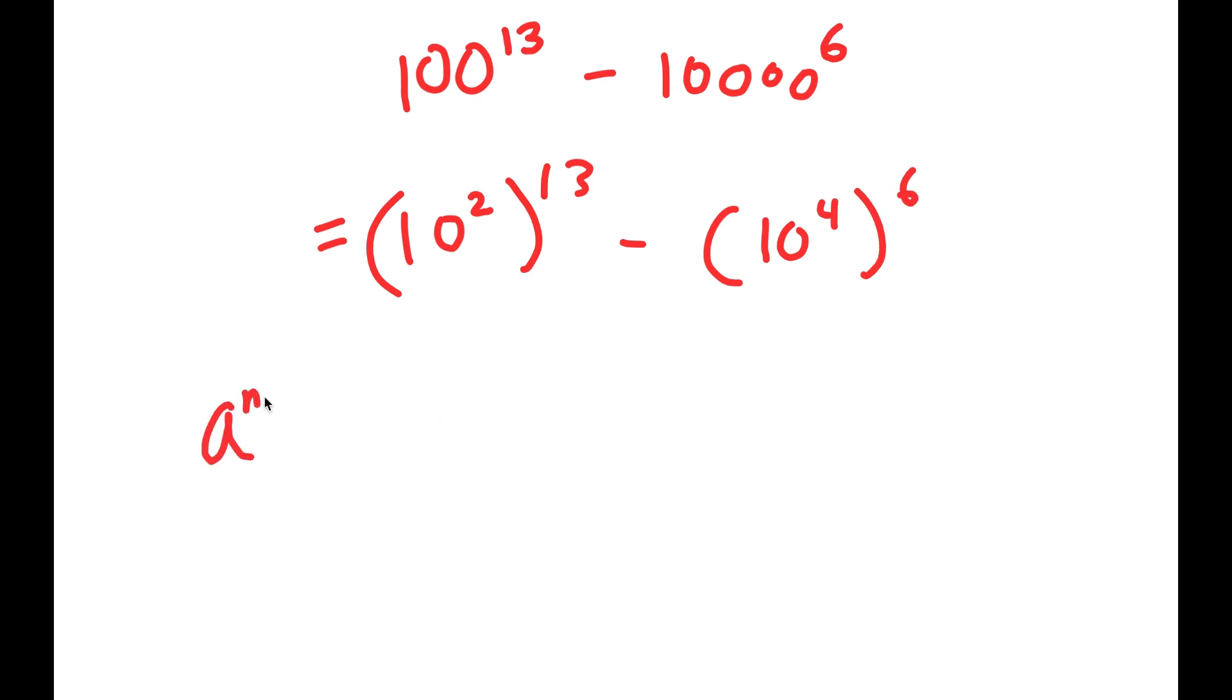Now, if I have something in the form a to the power of m to the power of n, this is equal to a to the power of m times n.